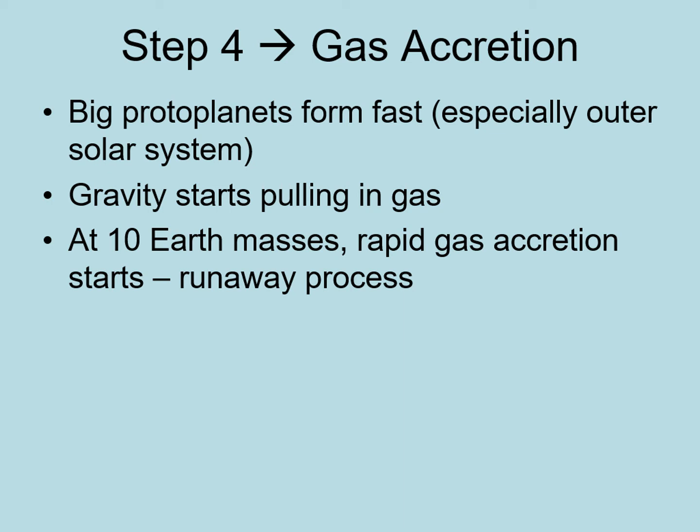Remember that the more gas a protoplanet accretes, the more mass it has, and hence the stronger its gravitational pull. So gas accretion starts to run away. We'll see more examples of these sorts of runaway processes when we talk about positive feedback systems in atmospheres near the end of the semester.